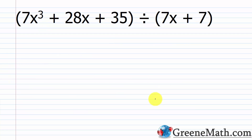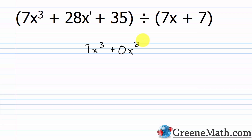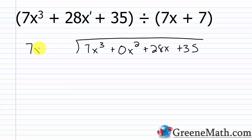Let's take a look at another problem. We have 7x cubed plus 28x plus 35 divided by 7x plus 7. We have 7x cubed, and the next term is 28x to the first power, so I'm missing my x squared term. I'll insert plus 0x squared as a placeholder. Then plus 28x, then plus 35. The divisor 7x plus 7 goes off to the side.